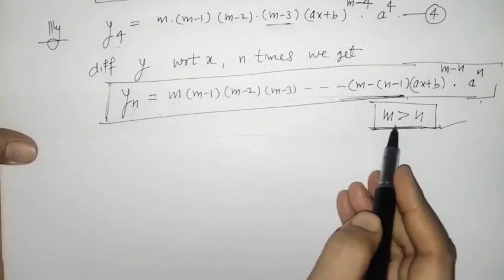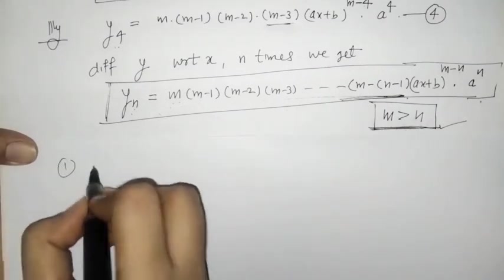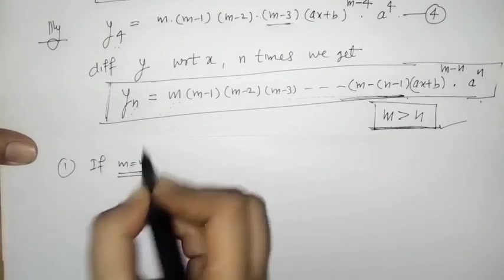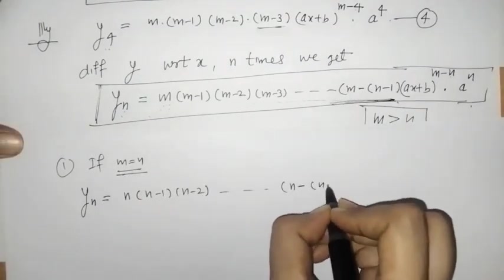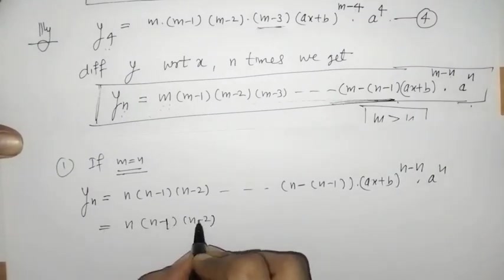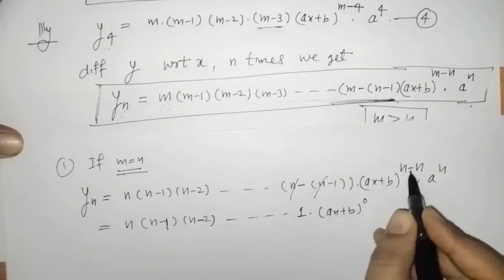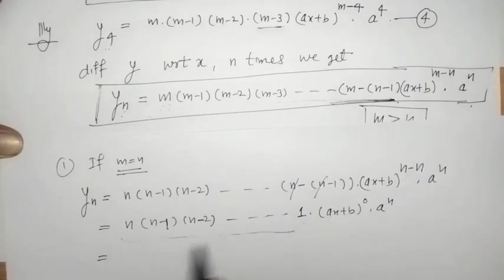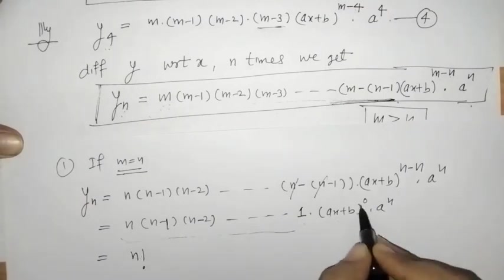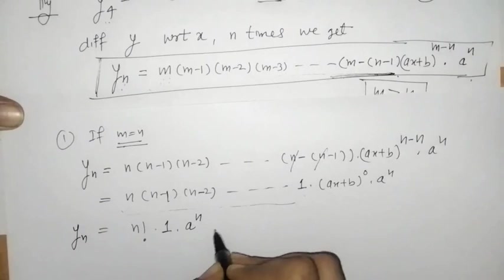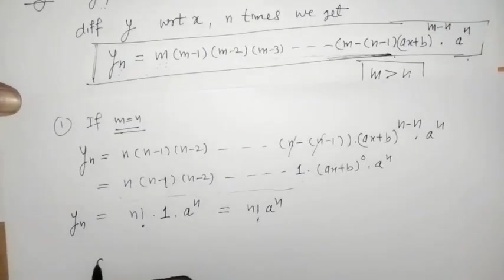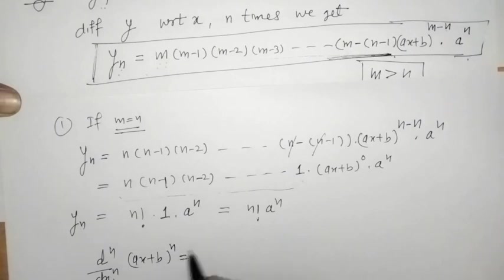Now let's check what happens if m equals n. Replacing m by n in the formula, we can simplify to get n factorial times (ax + b)^0, which equals 1, times a^n. So the nth derivative of (ax + b)^n is n! · a^n.